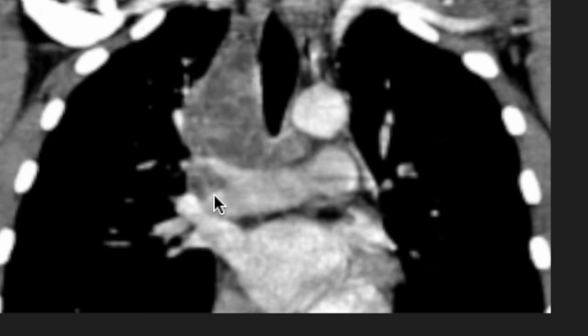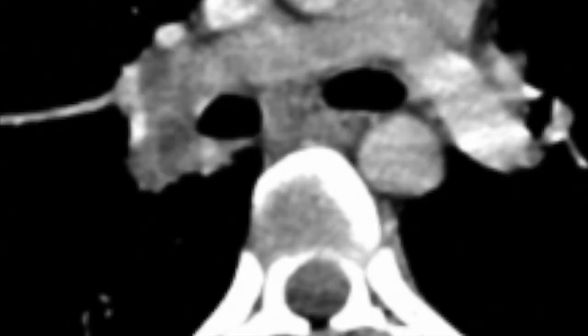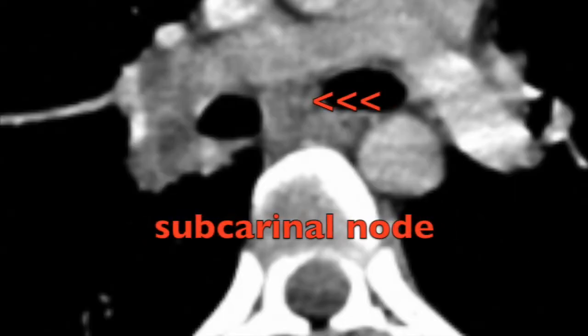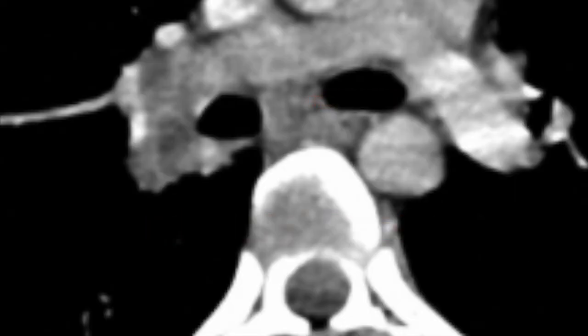On the coronal windows also we see a similar picture — we can see the nodes fairly outlined next to the tracheal shadow on the right side, along with hilar nodes as well as the subcarinal nodes.